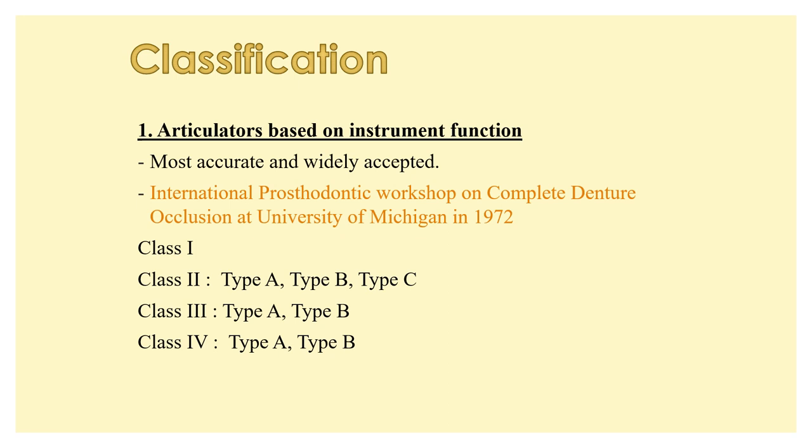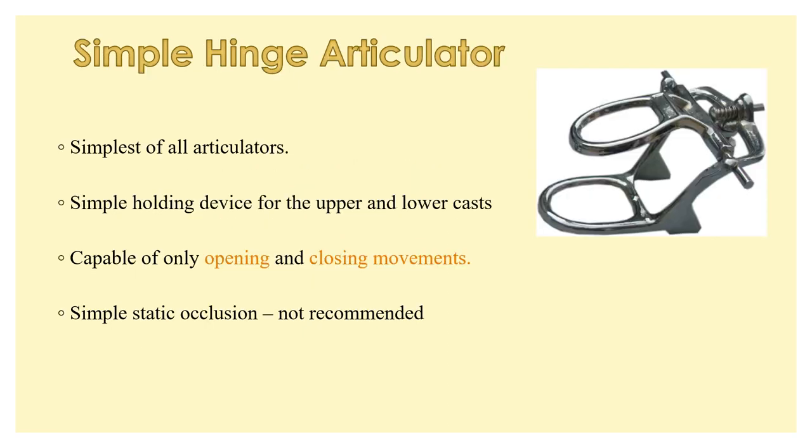Based on the classification given at the University of Michigan International Prosthodontic Workshop, articulators are classified as Class I, Class II, Class III, and Class IV. In Classes II, III, and IV you have Type A, Type B, and Type C; in III and IV you have Type A and B. Looking at the basic articulators: the simple hinge articulator is the simplest of all — it is a simple holding device. In your lab you would have seen that technicians use a simple hinge articulator just to ensure that the maxilla is occluding with the mandible.